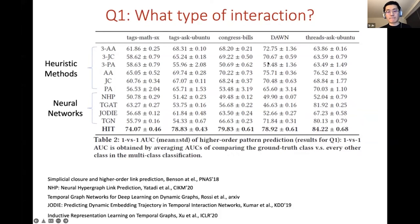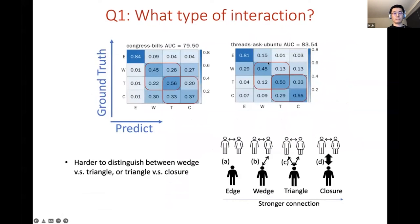For question one on what type of interaction will happen to three nodes, our model can significantly outperform the baseline as shown in the table here. Indeed, these higher order prediction tasks are too challenging for the baseline approaches and we definitely need a more powerful model. In our paper we provide a more detailed analysis on why these baselines cannot work well. Here we also show the confusion matrix of our model.